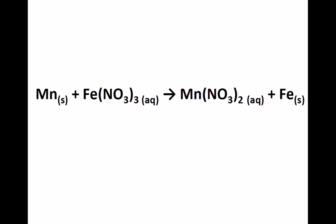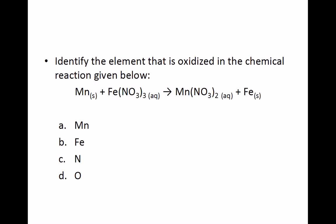We can use the shortcut and eliminate all elements that appear in the exact same polyatomic ions on both sides of the reaction. However, it is extremely important to be sure that none of these elements appear in any other form in the reaction. Since nitrogen and oxygen only appear in the nitrate ion on both sides of the reaction, they can be eliminated. Going back to the problem, we can eliminate choices C and D, and our choices are narrowed to manganese and iron.